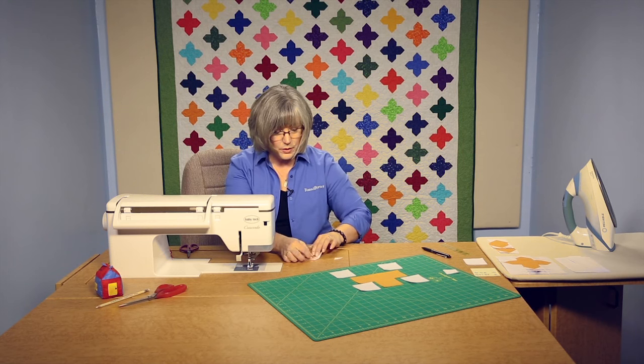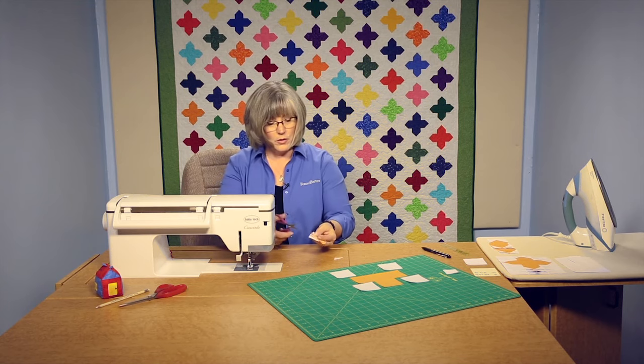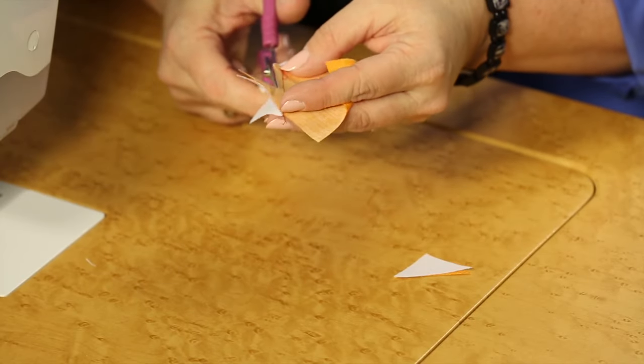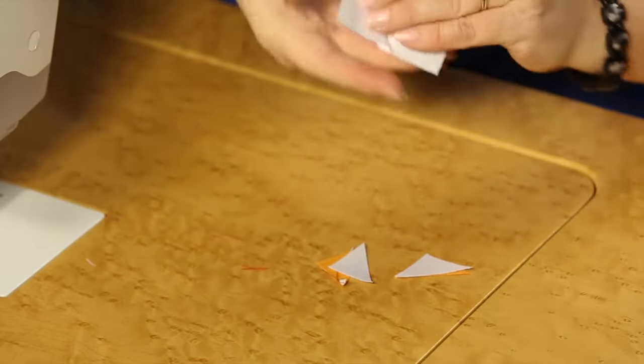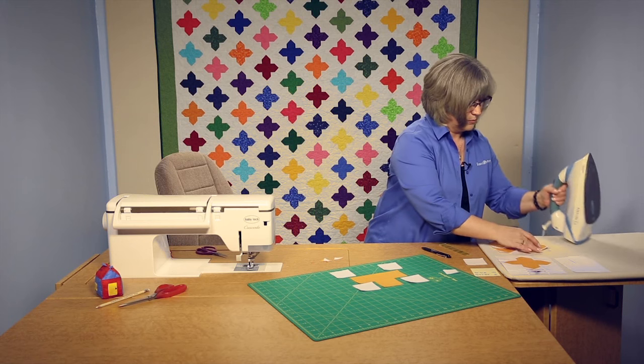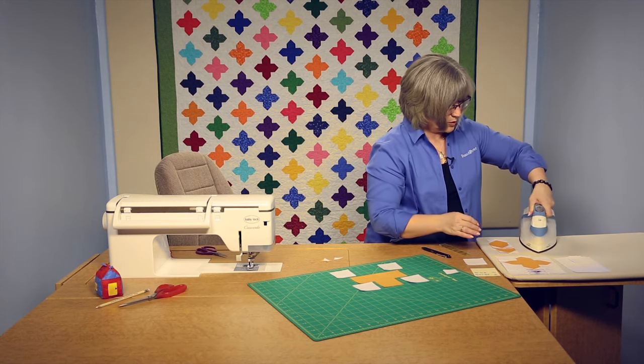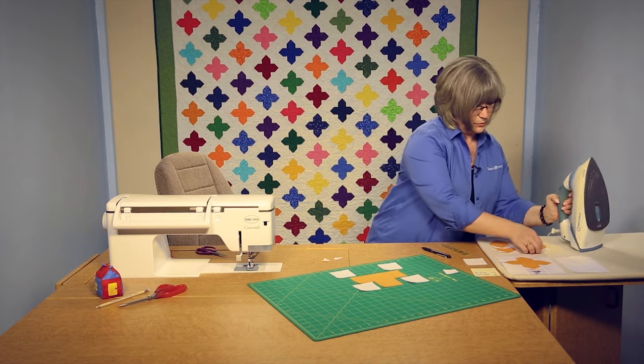And I'm going to open that again, all the way open to the stitching line, and trim away the underneath portion. And our tails clean it up a little bit. Now we can take that over to the iron, and you'll want to make sure that your pieces are nice and flat, crisp, ready to go.